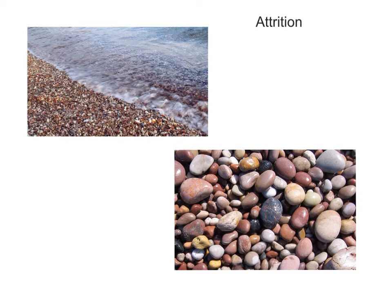Number four is attrition. This is not about eroding the cliff itself, but about beach material — fragments of rock being eroded. You can see from any beach that pebbles are of different sizes and roundness. This happens when a swash comes into the beach and causes the beach fragments to bounce off each other. They knock against each other so much over time that they become more rounded, smoother, and smaller. This is the process of attrition.